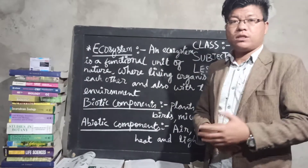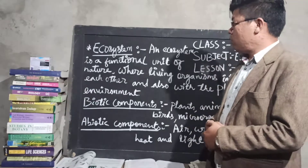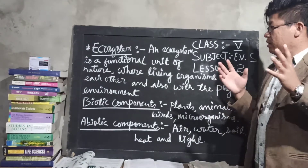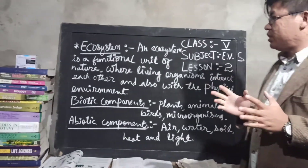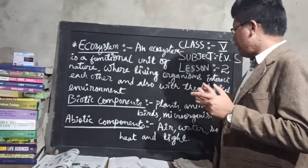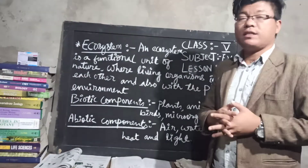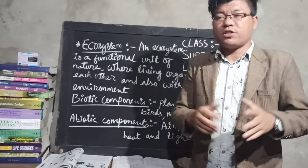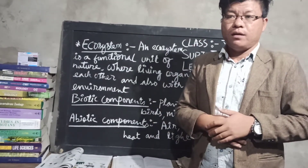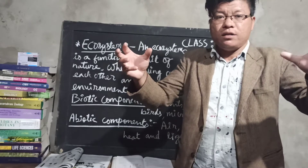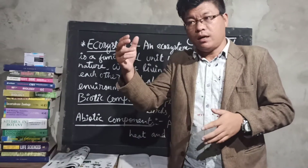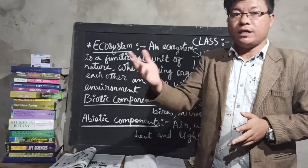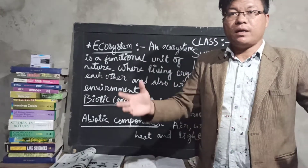So what is ecosystem, or what do you mean by ecosystem? Ecosystem is a functional unit of nature where living organisms interact with each other and also with the physical environment. It is a functional unit of nature where both the biotic component and the abiotic component interact among themselves and depend upon each other.